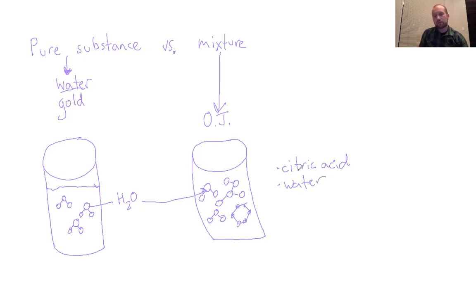So these two things are pure substances. Water is a substance, citric acid is a pure substance. But when we mix them together, they form this mixture called orange juice.